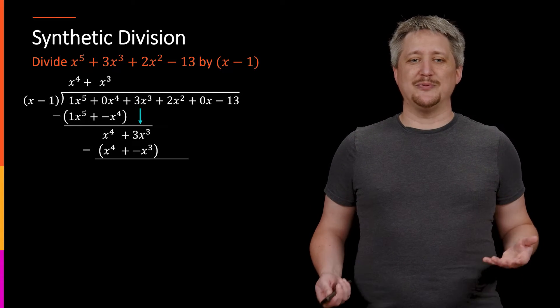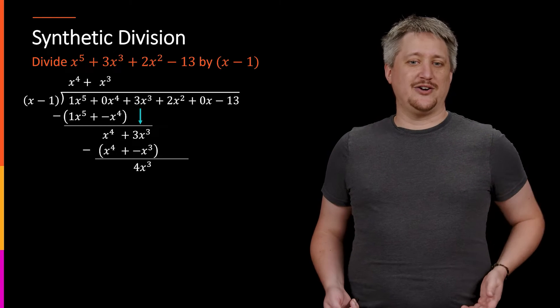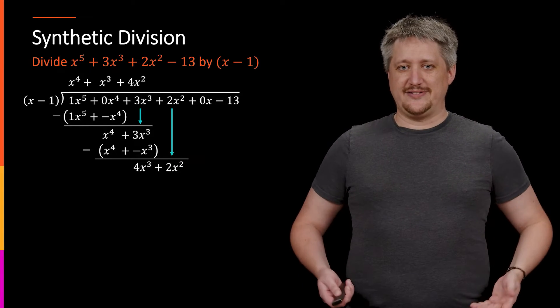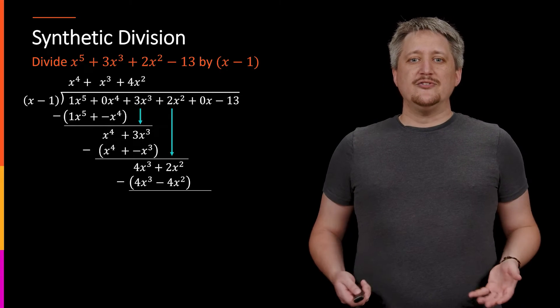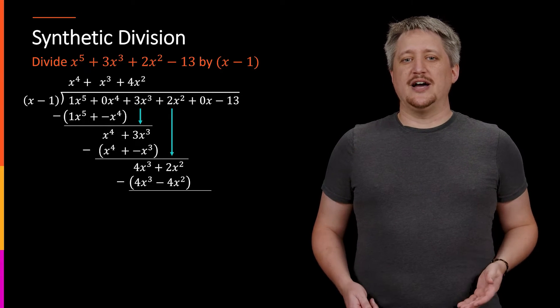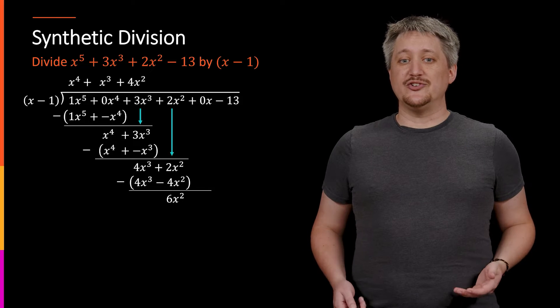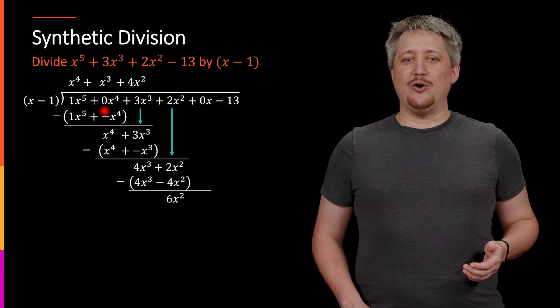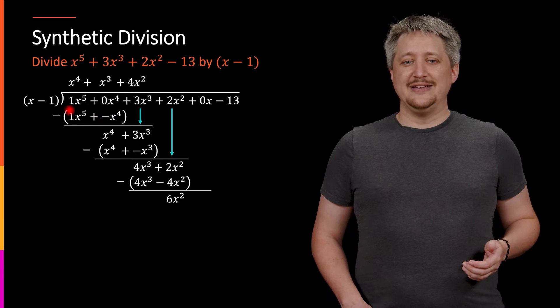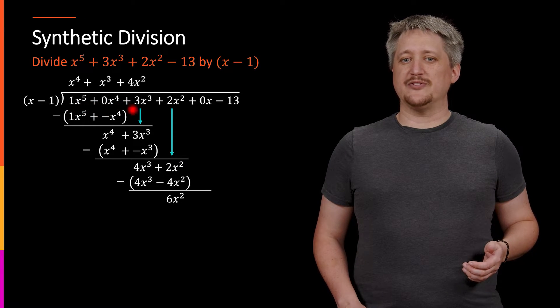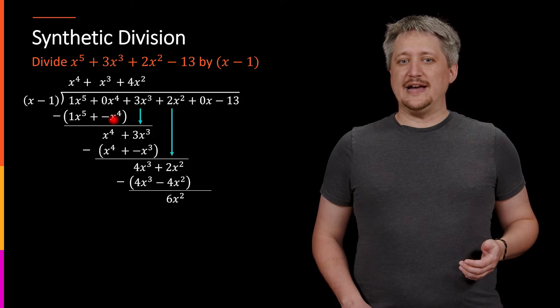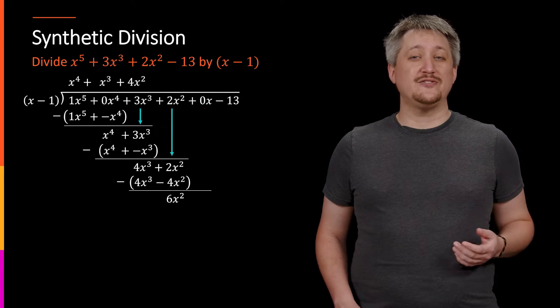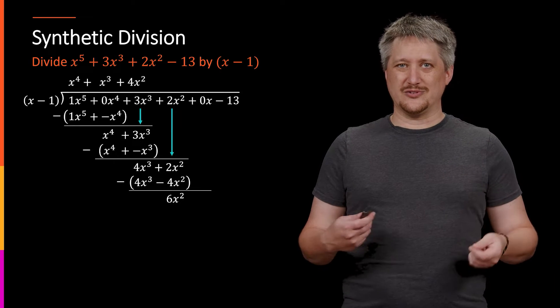Now we have 4x cubed, drop the next piece, et cetera. So as we're working through this, I'm going to make this observation and this was an important deal that we talked about - we had to have all the terms here. So even though this was x to the fifth plus 3x cubed, we actually had to inject this 0x to the fourth and this 0x as placeholders, otherwise this whole process starts to break down.